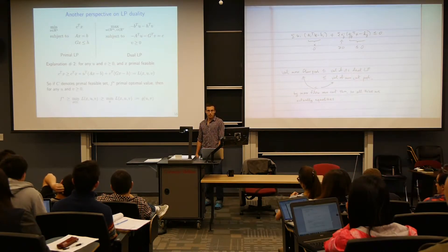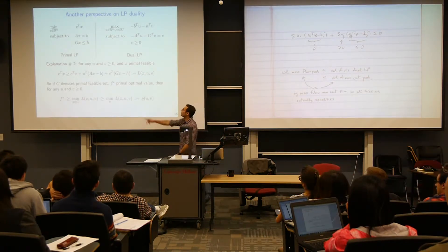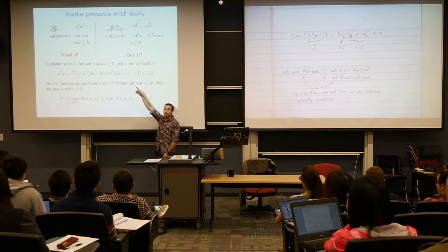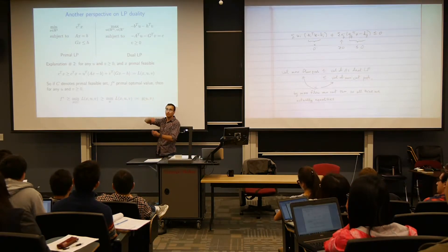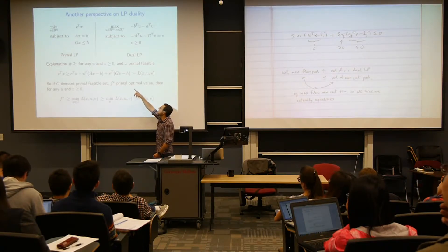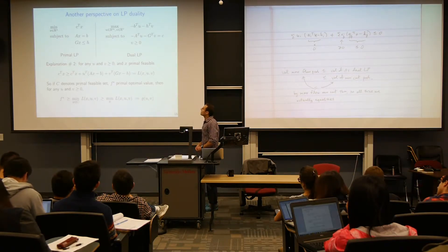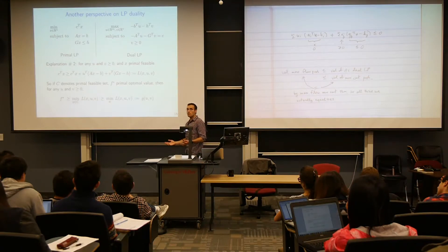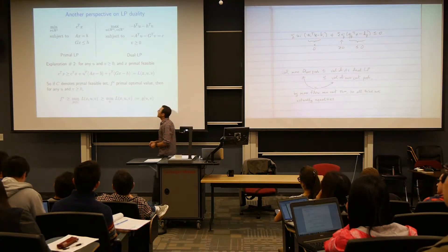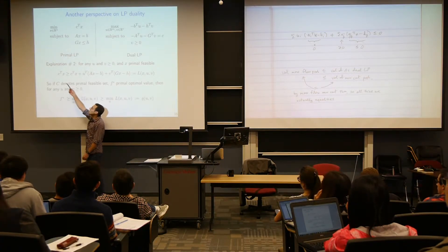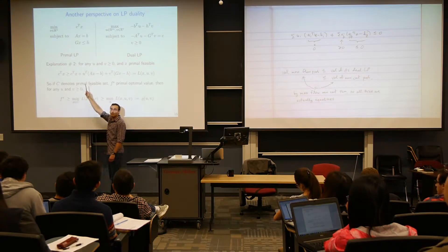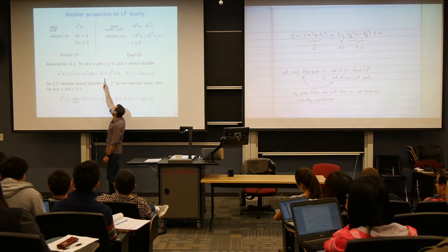For any u and v greater than or equal to 0 — same setting — I introduce a variable that corresponds to my equality constraint and a variable that corresponds to my inequality constraint. u has one component for every equality constraint and v has one component for every inequality constraint. I constrain v_i to be bigger than or equal to 0 for all its entries. And I observe that if x is primal feasible, I can take the criterion value c transpose x and say that it's bigger than or equal to c transpose x plus u transpose (Ax minus b).